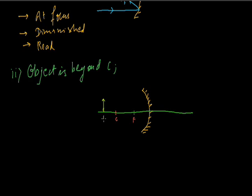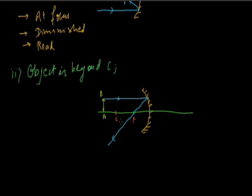For making the image I need two rays. The first ray is parallel to the principal axis, which after reflection passes through the focus. The second ray uses the property that whenever a light ray passes through the center of curvature, after reflection it also passes through the center of curvature — it just retraces its path. So these two reflected rays intersect at a point.